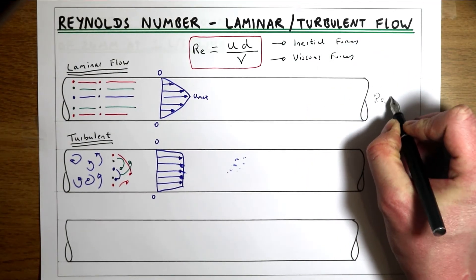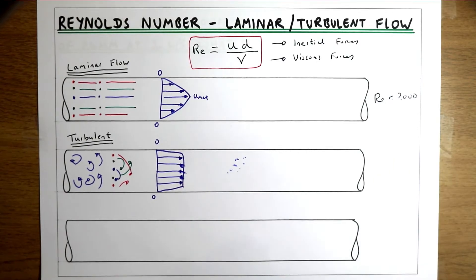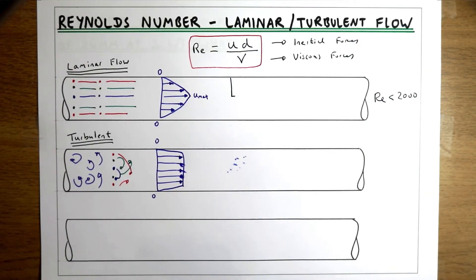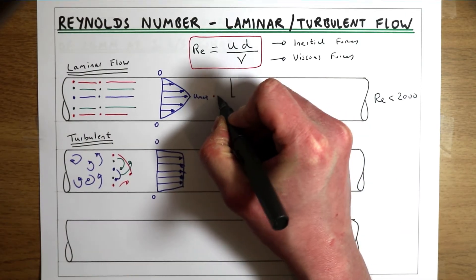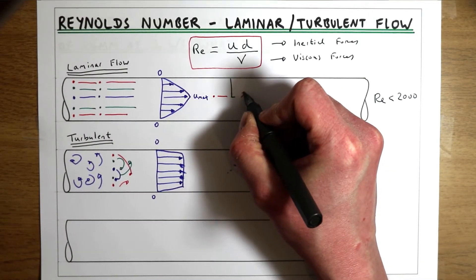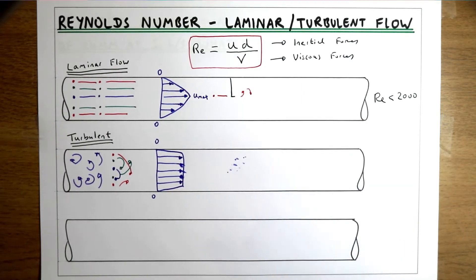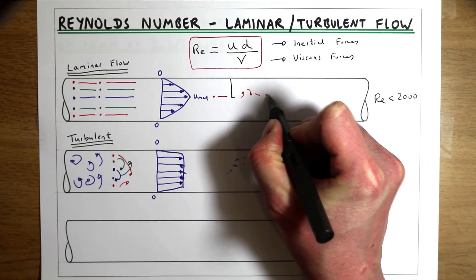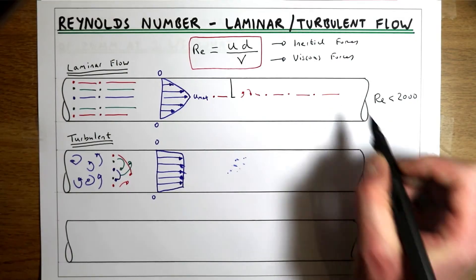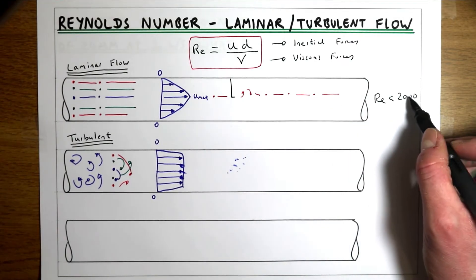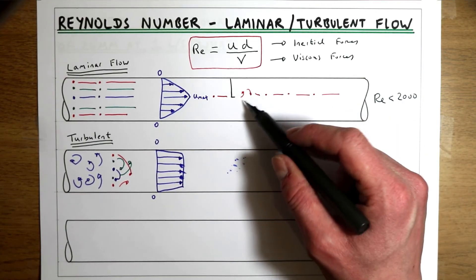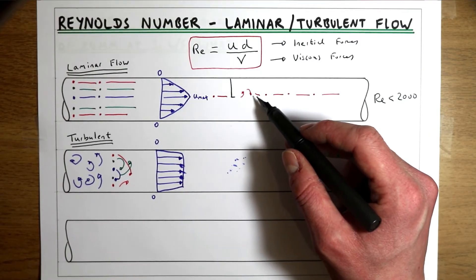When Reynolds number is below 2000 the flow will be laminar. If we put a disturbance in the flow — say a pin into the centre — a particle that hits this disturbance and starts to swirl will eventually have that swirling dampened out by the viscous forces, and the particle will return to moving in a straight line. So when Reynolds number is below 2000, viscous forces dominate and will always dampen out perturbations in the flow that could lead to turbulence.